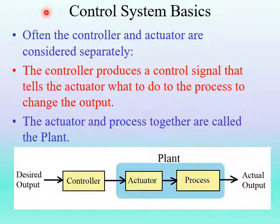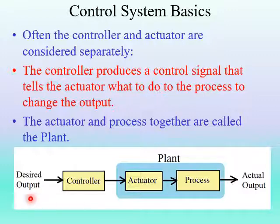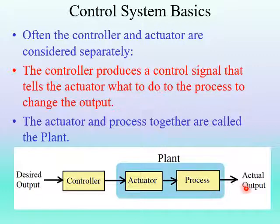The controller and the actuator are usually considered separately. The controller produces a control signal that tells the actuator what to do to the process to change the output. The actuator and the process together are called the plant. The desired output is input into the controller — that's our set point — which sends a signal to the actuator that changes the process to produce the actual output.